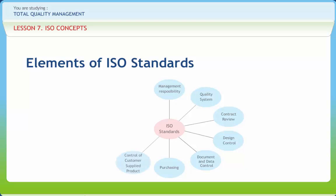Purchase orders must precisely describe the ordered products and services. This requirement applies when a customer furnishes items for incorporation into the products or for related support. Process parameters and product characteristics must be monitored and controlled. Equipment and tools must be suitable and well maintained. Finished products must be verified as meeting requirements before being shipped to customers. The equipment must be calibrated on a prescribed interval against recognized standards. The inspection and test status of items must clearly indicate if they have been inspected or not, accepted or not, put on hold or rejected. Defective or non-conforming products must be identified and the defect recorded. The items should be segregated to avoid inadvertent use.